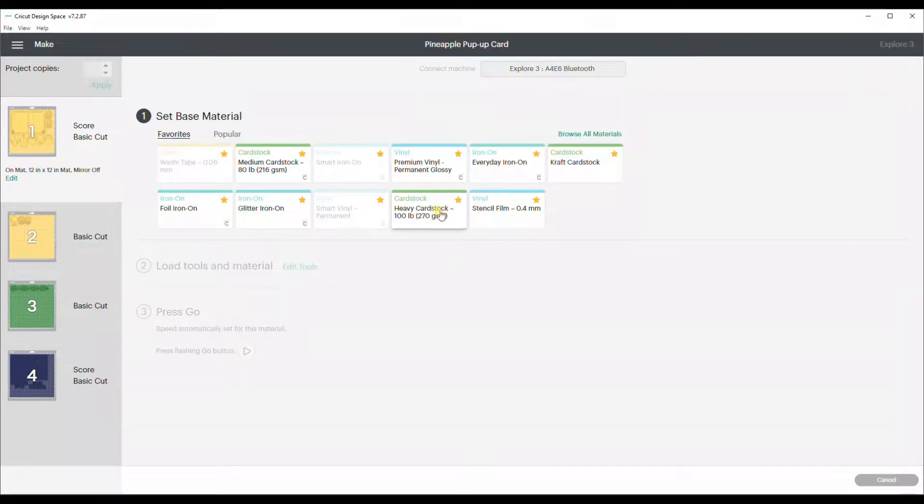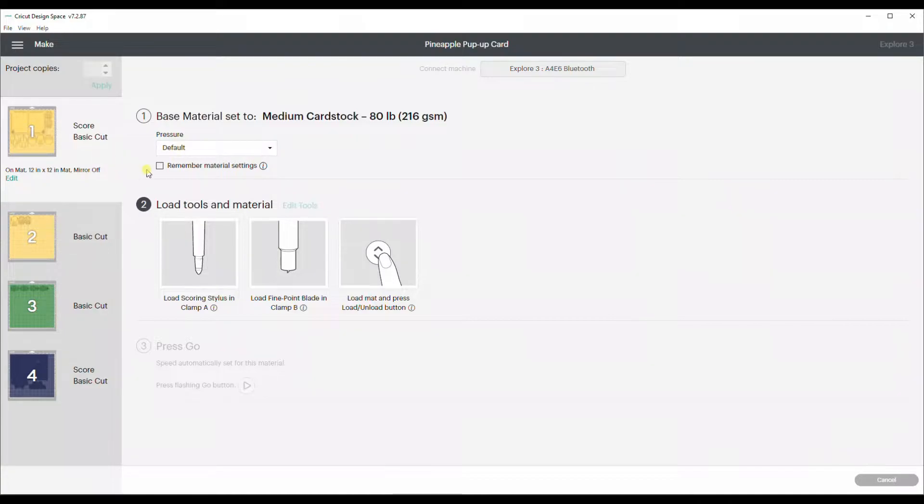On this screen, we will be able to select the weight of the card stock. In this case, I am working with medium cardstock that is 80 pounds. And then I am also going to click remember material settings so it perpetuates down to the other sides. Alright, I am going to go cut this. I will be right back.